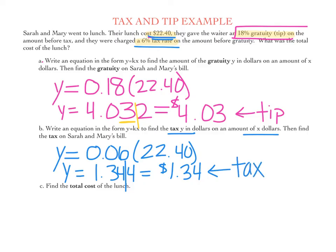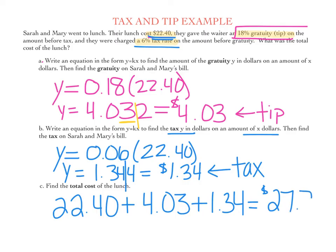And now to find the total cost of my lunch, we need to take our original lunch cost, $22.40, and we're going to add our tip, $4.03, and we're going to add our tax. And once we do that, we will have our total cost of the lunch, $22.40 plus $4.03 plus $1.34, and I get a total cost of $27.77.